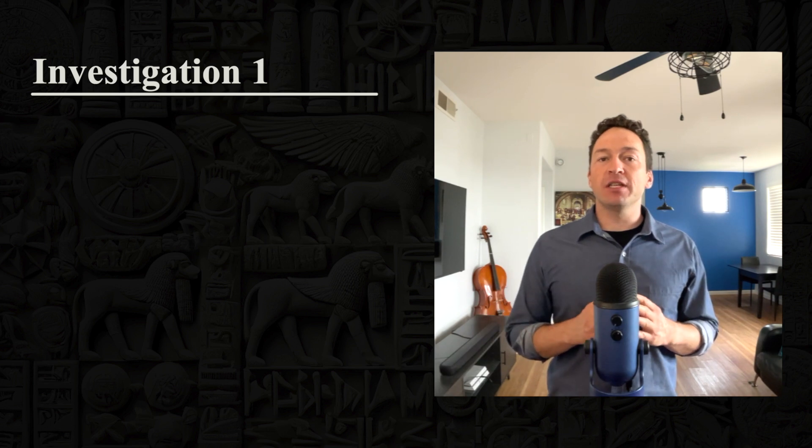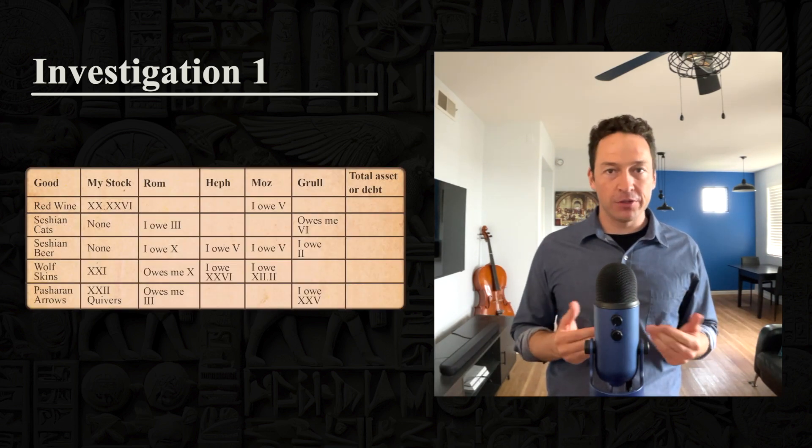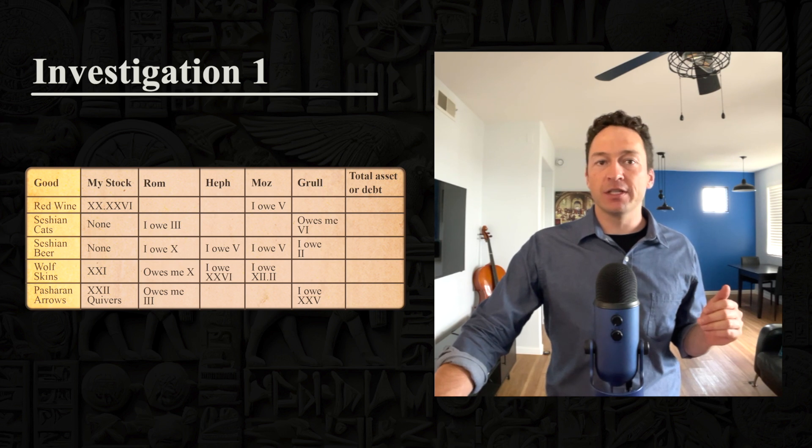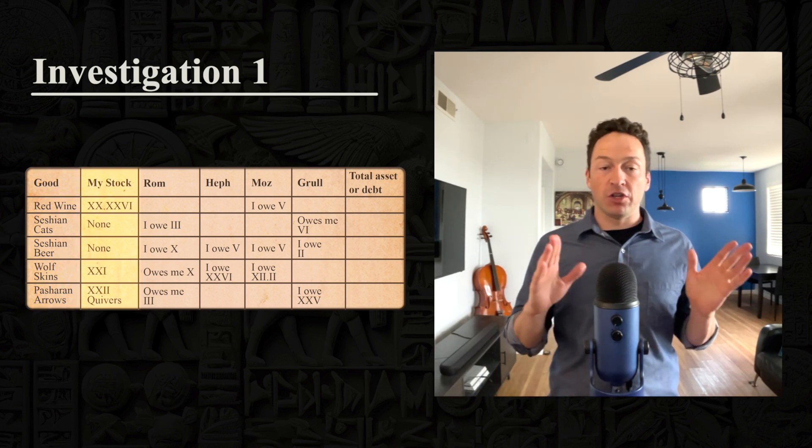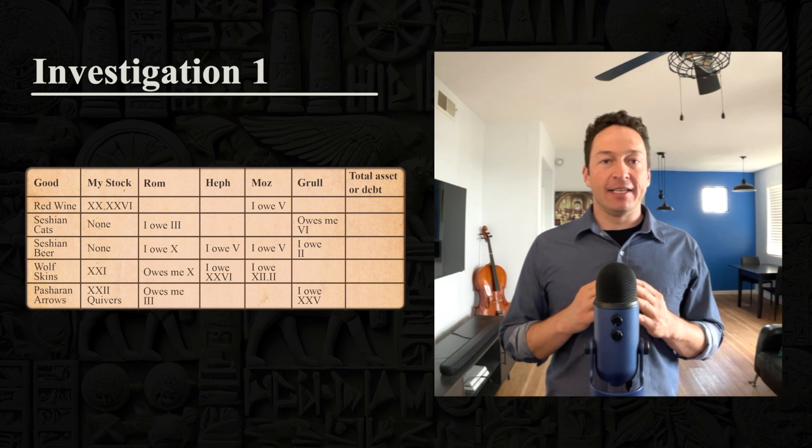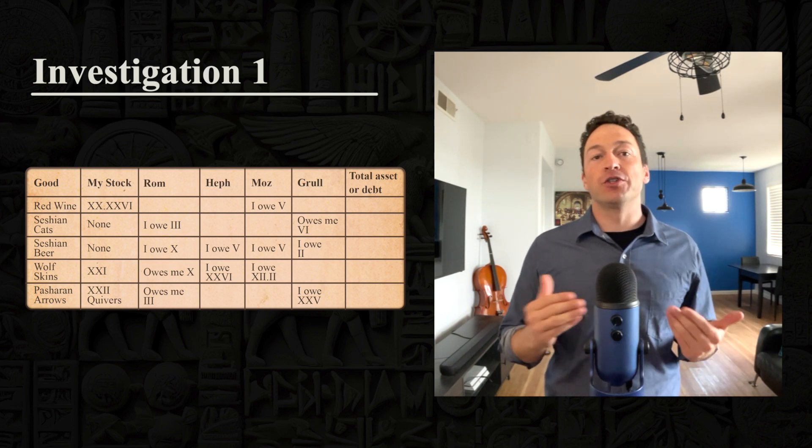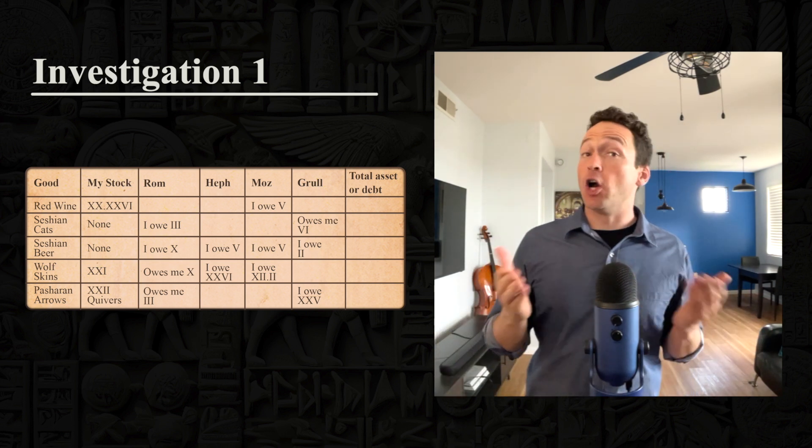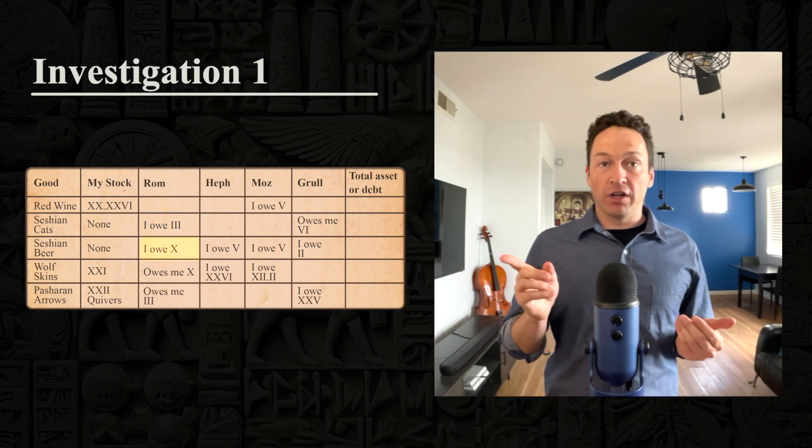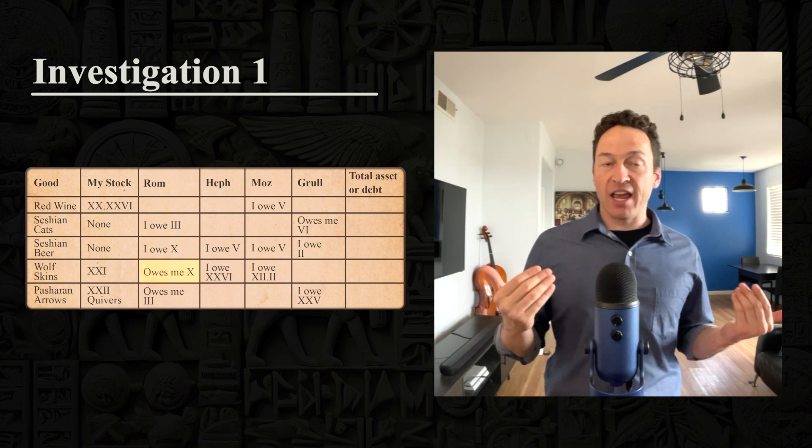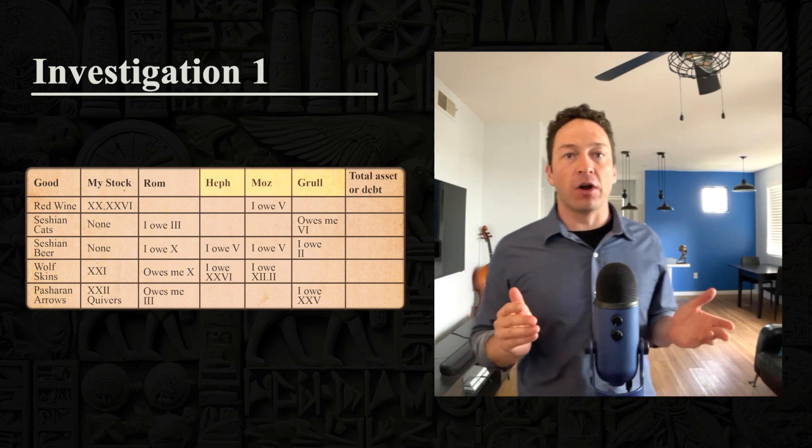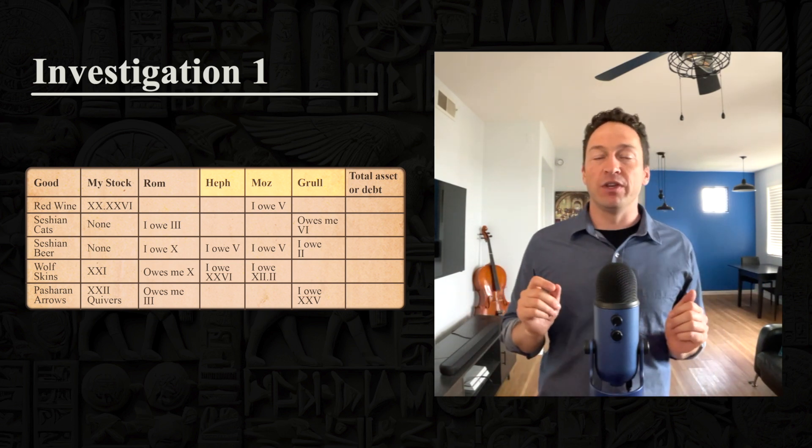Investigation one. Ark comes up with this new table to keep track of what he owes and what he is owed by other people. In the first column, it's the name of all of these different goods. Then in the second column, he's written out his stocks - these are the actual items that he has on hand in his physical possession. In further columns, we see what he owes other people or is owed. He owes Ram three of those session cats and some session beer. Alternatively, Ram owes Ark 10 wolf skins. He's kept track of this for a number of different traders: Hef, Moz, Grahl.